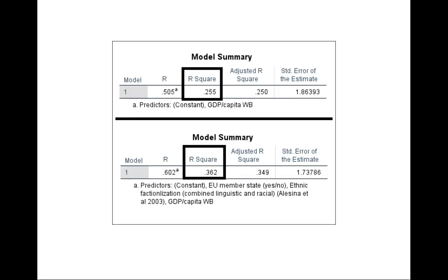We can compare the R-squared between both models. The R-squared increases from 0.255 to 0.362, which suggests that adding additional independent variables improved the ability of the model to explain variations in the dependent variable.